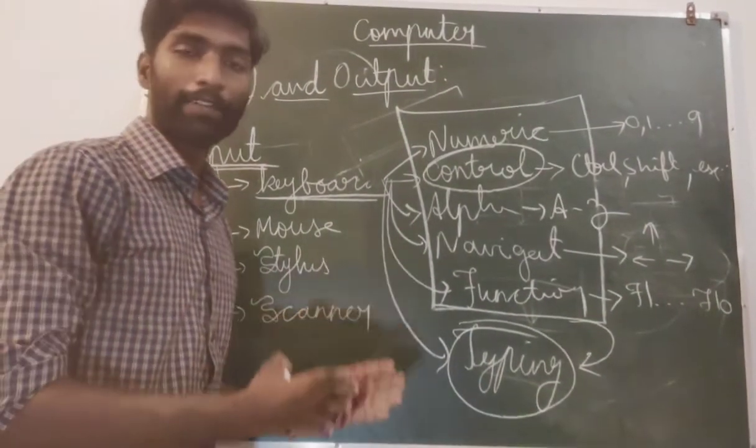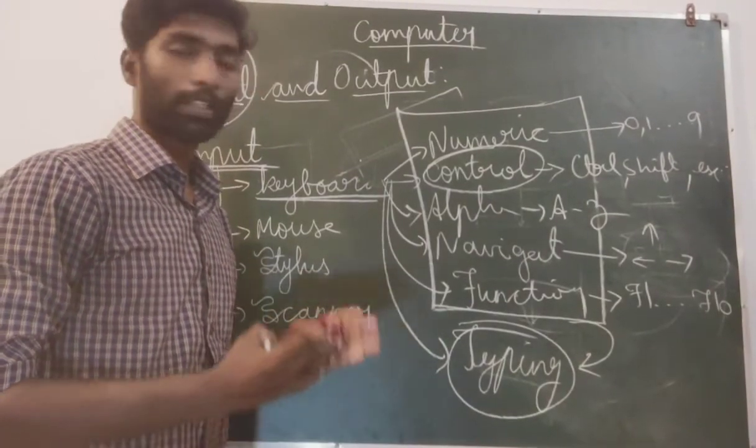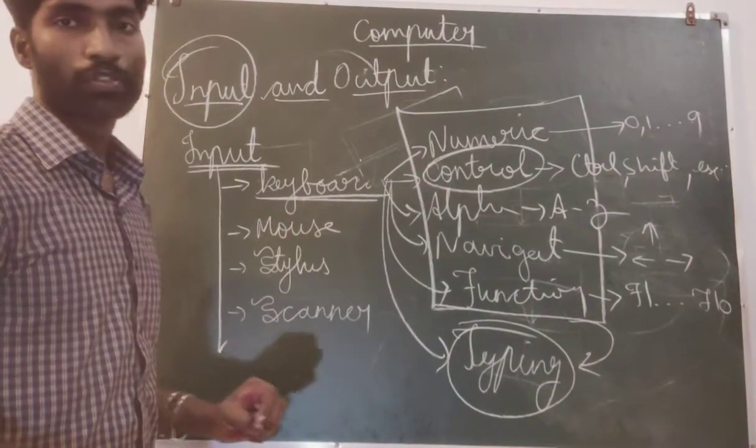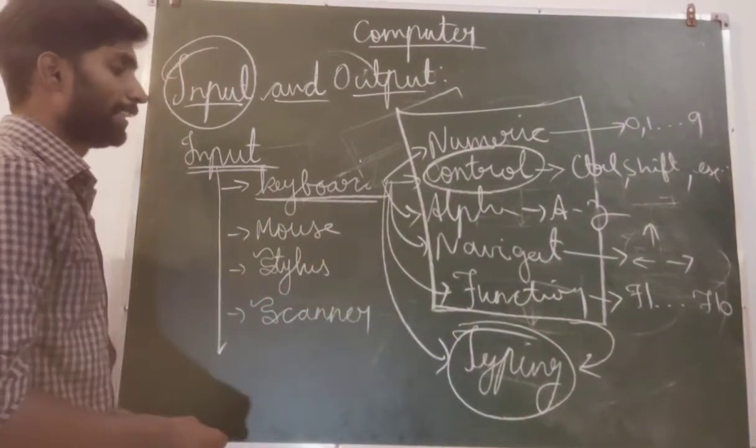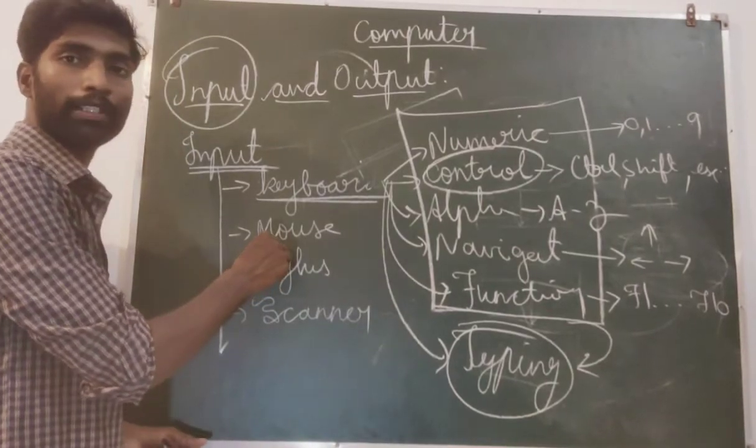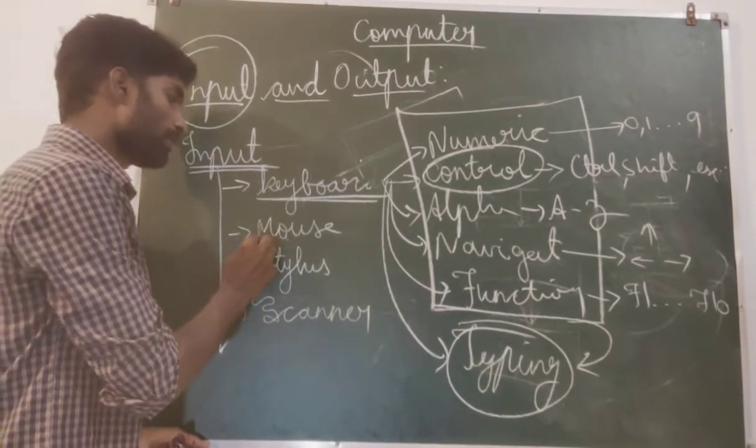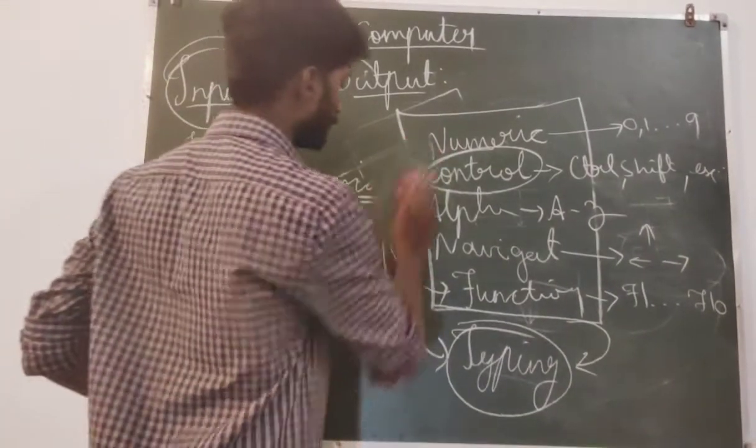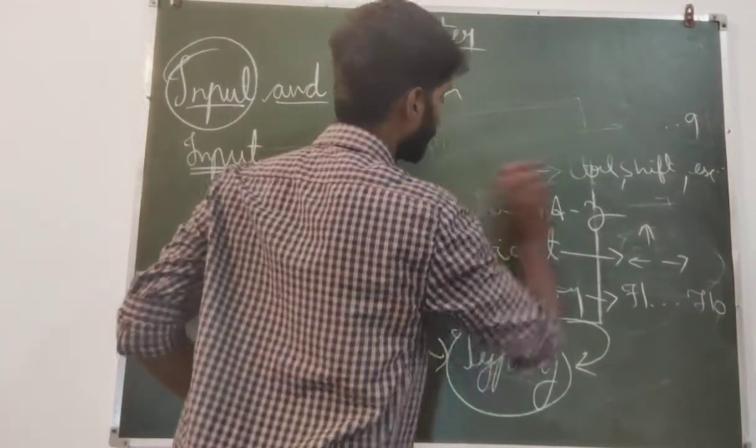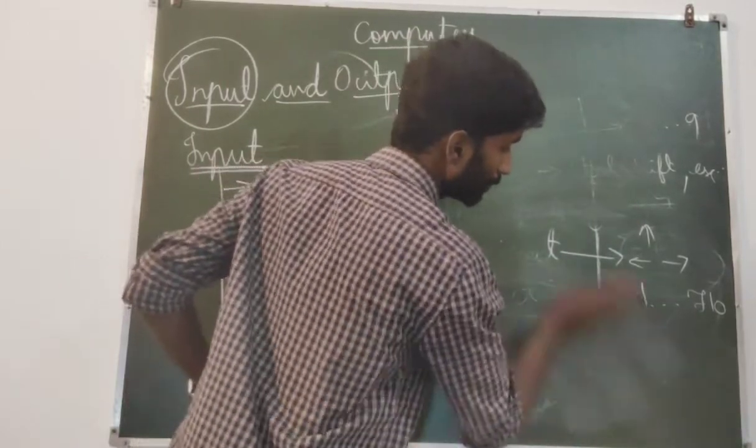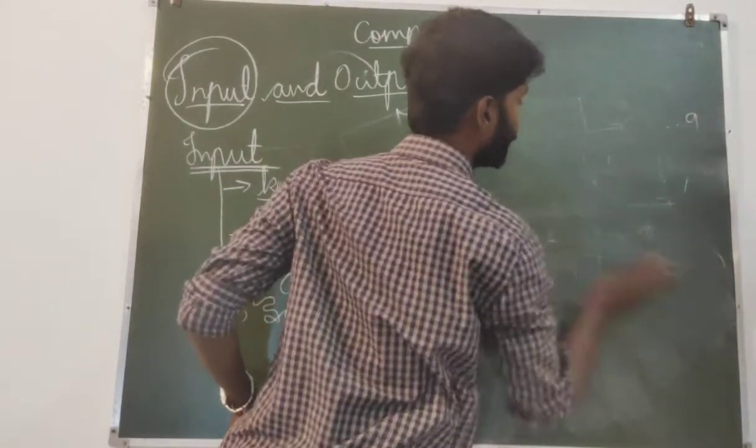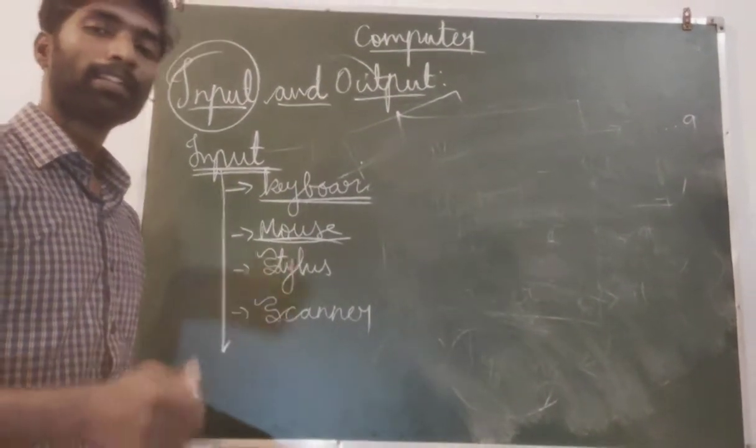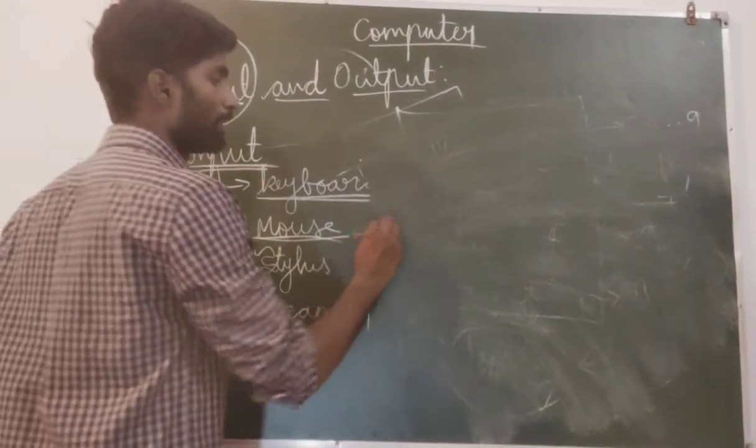I hope you are not having any doubt. It is very easy. After that, mouse. Mouse we can say is a pointing device. In this mouse, there are mainly three types, three categories.